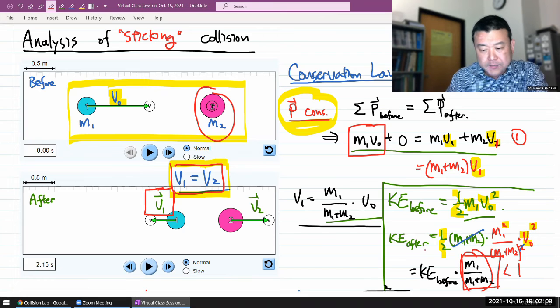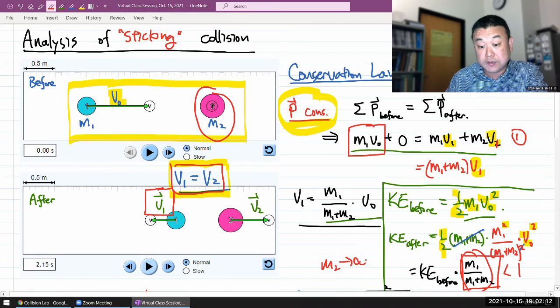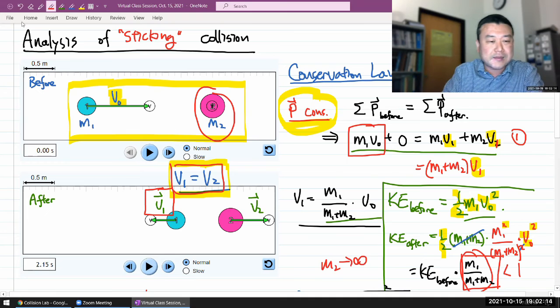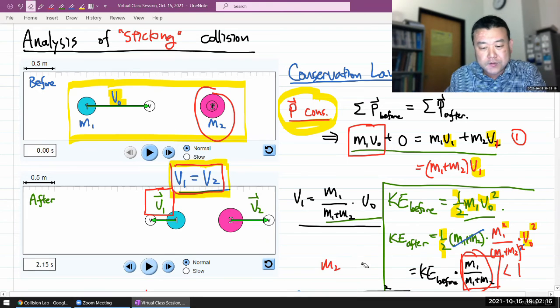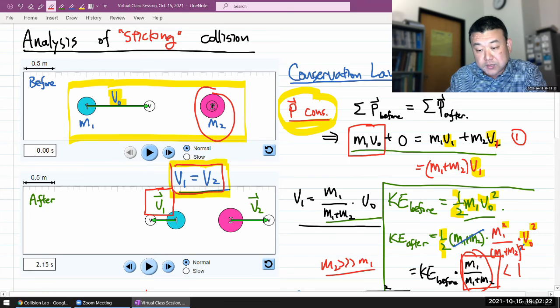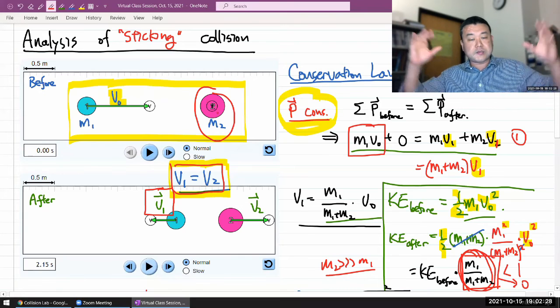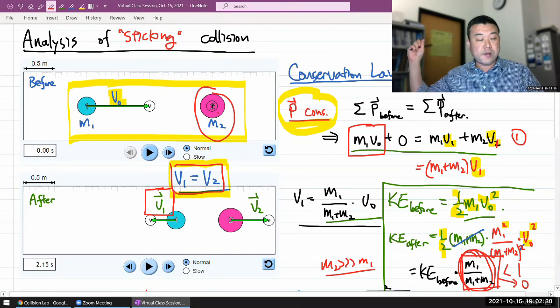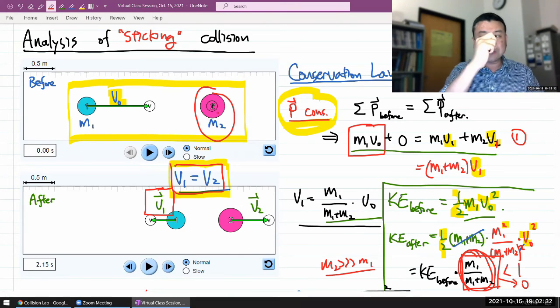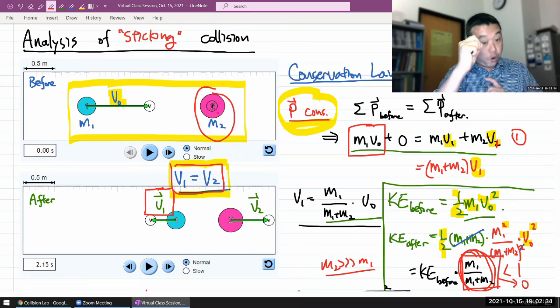And in the limiting case, where if M2 goes to infinity, or in the limit where M2 is much, much, much greater than M1, then you see this ratio approaching zero. So if M2 is like a very large mass, like a wall, then M1 goes to it, sticks to it, then all of the kinetic energy goes away. When a mass sticks to a wall, it stops, nothing's moving, all the kinetic energy is gone.